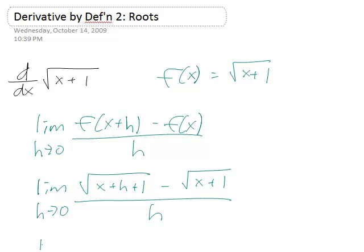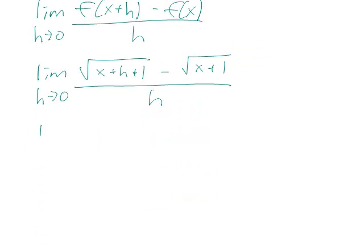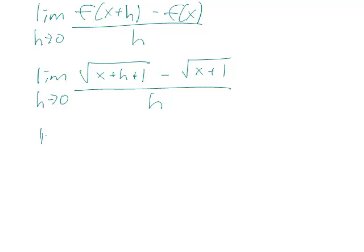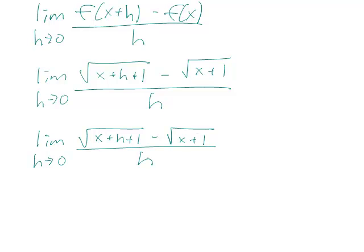And one thing that we already know how to do is that if we see square roots, we should multiply the top and bottom of this fraction by the conjugate of the top.